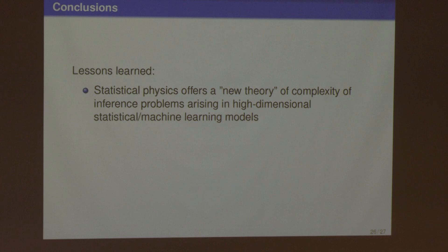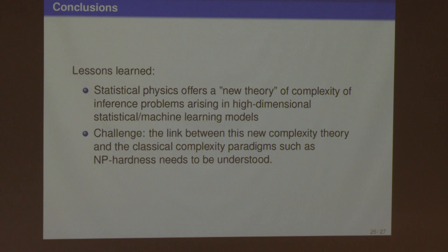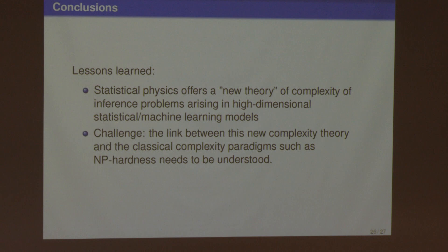The last I learned is that statistical physics possibly offers a new theory of complexity of inference problems arising in high dimensional statistics and machine learning data. It might offer more insightful and appropriate way to think about complexity in models involving uncertainty. Of course, we don't understand the nature of this complexity fully. And importantly, we also don't understand how does it link with the classical paradigms of complexity such as NP-hardness and NP-completeness. And that's the end of my talk. Thank you.